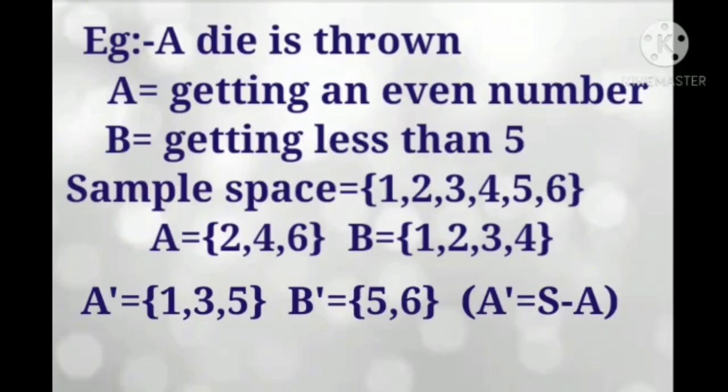Here is an example: a die is thrown. The two events are: A is getting an even number, B is getting less than 5. Here, the sample space is equal to 1, 2, 3, 4, 5, 6. So event A equals 2, 4, 6 and event B equals 1, 2, 3, 4.